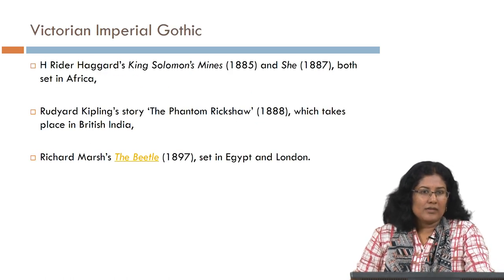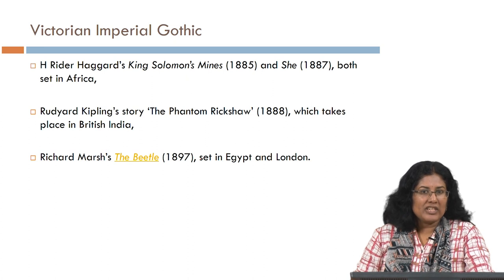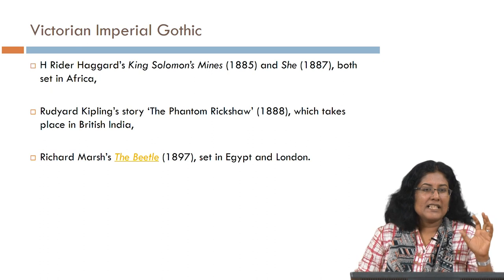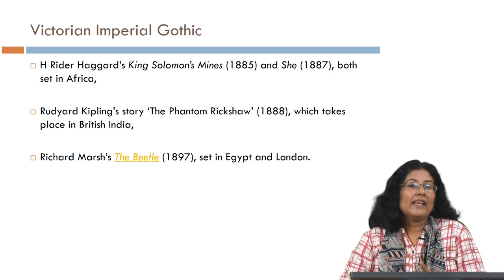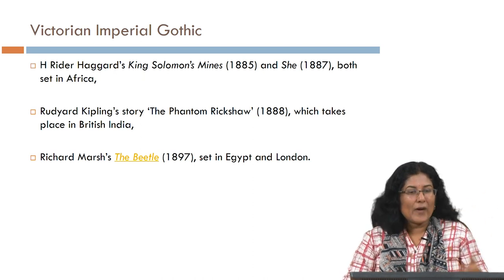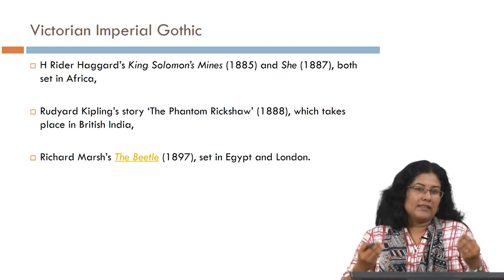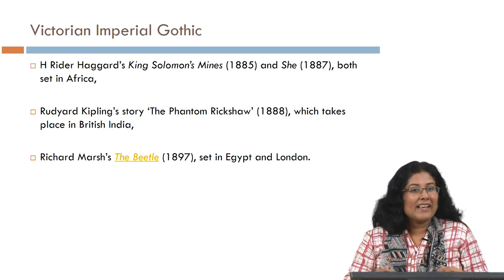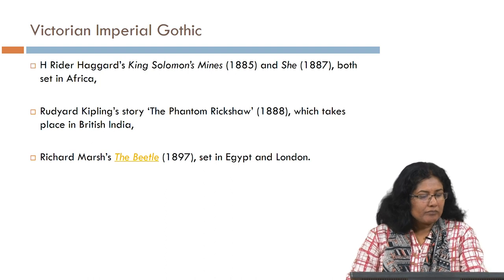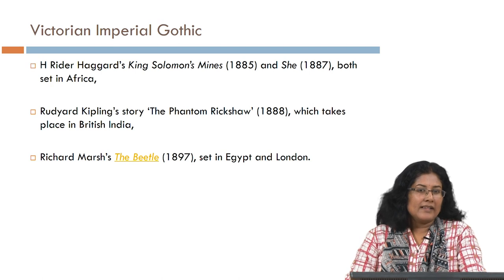Some examples of works categorized as Victorian Imperial Gothic include Rider Haggard's King Solomon's Mines, published in 1885, and She, 1887 — both set in Africa. The dark continent is lumped with this category of the Imperial Gothic because of the forces of imperialism. Rudyard Kipling's The Phantom Rickshaw is set in British India and is also an example of the Imperial Gothic. Richard Marsh's The Beetle was set in Egypt and London.